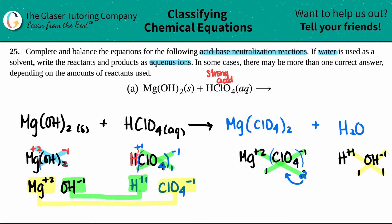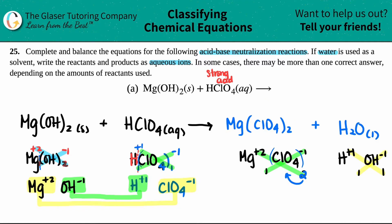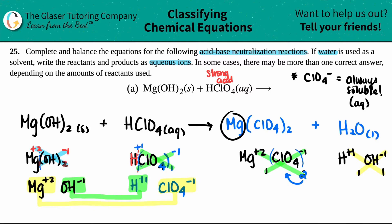Now let's put the states. We know that water is the solvent and it's going to be in its liquid form. But what about magnesium perchlorate? This goes back to your solubility rules. On that chart, it says that ClO4 — any perchlorates — are always soluble. There are no exceptions. So they're always going to be aqueous. I don't care what metal it's bound to; it's always going to be aqueous. So magnesium perchlorate is going to be AQ.